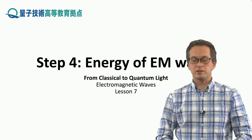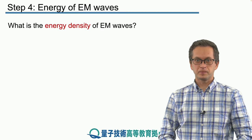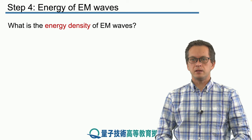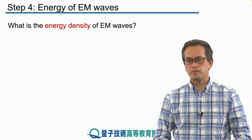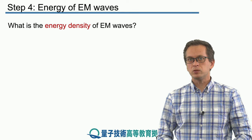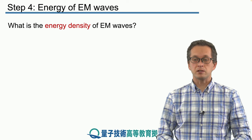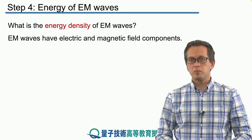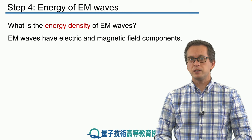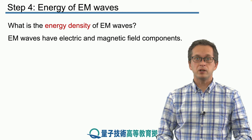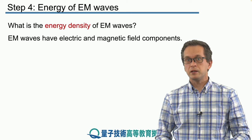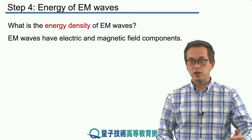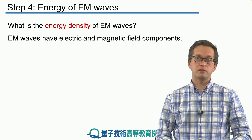Energy of electromagnetic waves. We can now ask the question: what is the energy density of electromagnetic waves? We know that electric fields can store energy and so can magnetic fields. Because electromagnetic waves are really just oscillating electric and magnetic fields, we expect that they are able to store and transfer energy as the electromagnetic wave propagates through space.